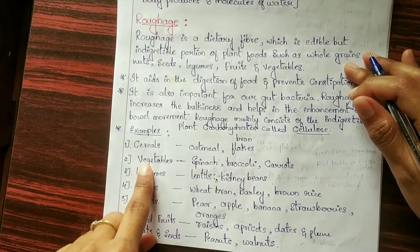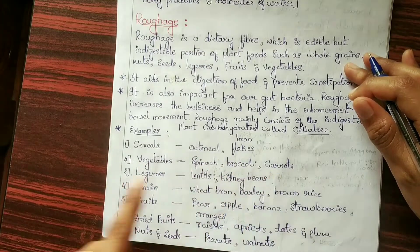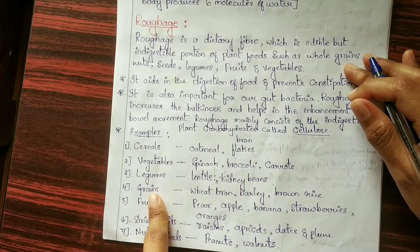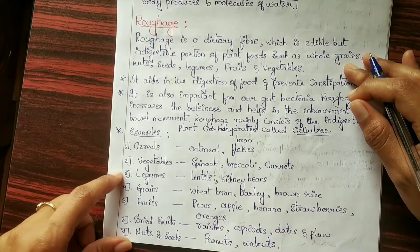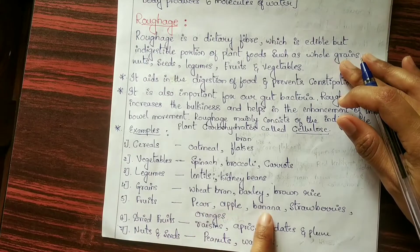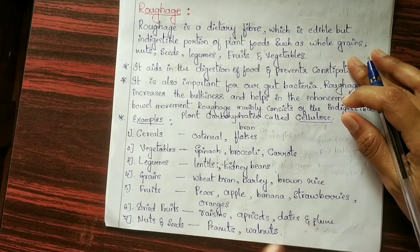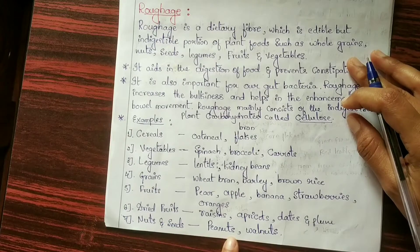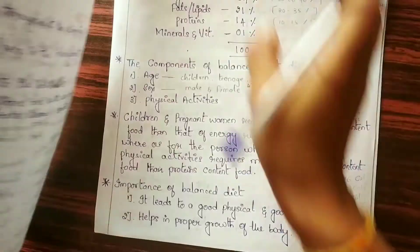Sources of roughage include cereals like oatmeal and bran flakes; vegetables like spinach, broccoli, and carrots; legumes like lentils and kidney beans; grains like wheat bran, barley, and brown rice; fruits like pear, apple, banana, strawberries, and oranges; dried fruits like raisins, apricots, dates, and plums; and nuts and seeds like peanuts and walnuts.